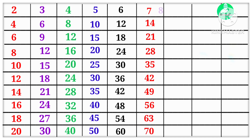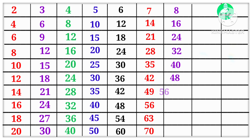8 1s are 8, 8 2s are 16, 8 3s are 24, 8 4s are 32, 8 5s are 40, 8 6s are 48, 8 7s are 56, 8 8s are 64, 8 9s are 72, 8 10s are 80.